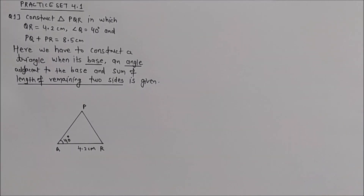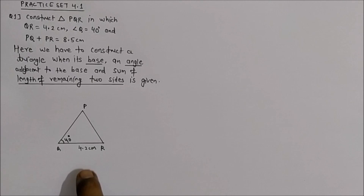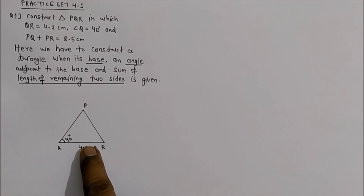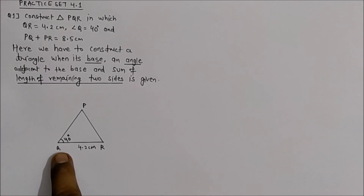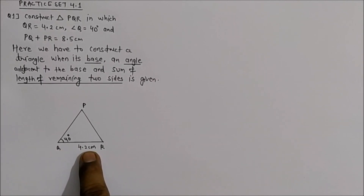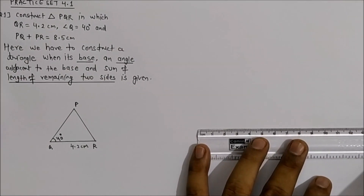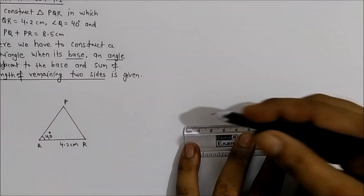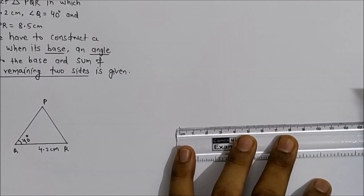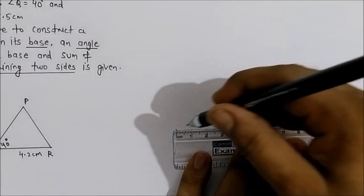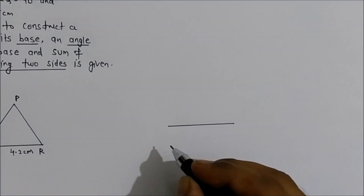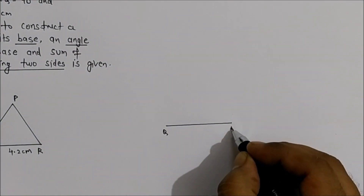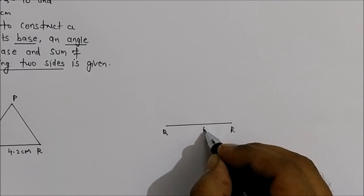Now let us start with the actual construction. The first step is to draw the base QR as 4.2 cm. We have drawn the base QR = 4.2 cm.